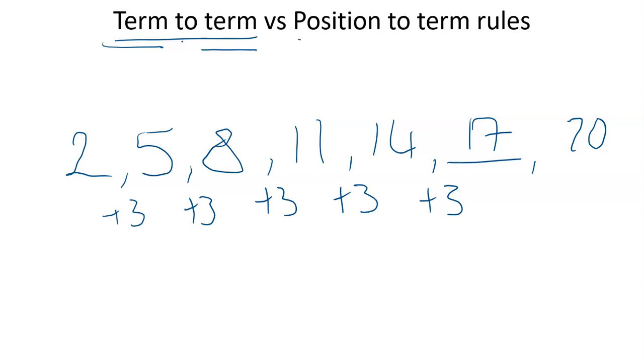And that's very different from the position-to-term rule. The position in a sequence is where you are. So are you first? Are you second? Are you the third term or the fourth, fifth, sixth, seventh? You get the idea.